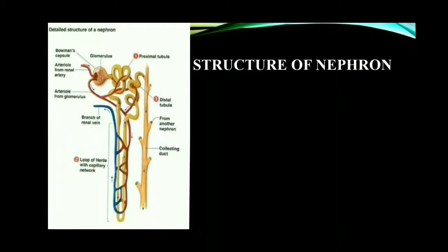We have a pair of kidneys for the excretion of waste materials. Kidneys filter the waste materials from the blood and send them out in the form of urine. The urine formation takes place in the nephrons. That is why nephron is called the structural and functional units of kidney. Each kidney consists of more than 1 million nephrons. The nephrons play a vital role in the process of excretion.